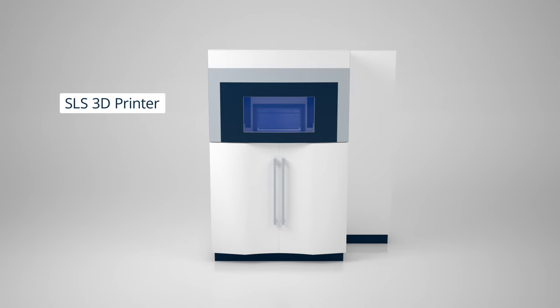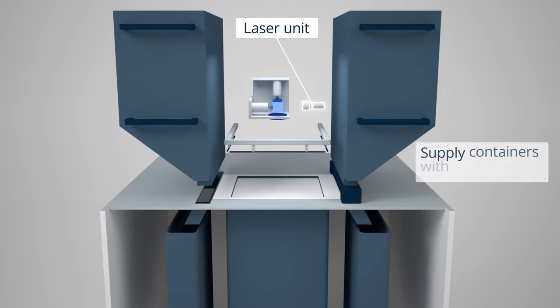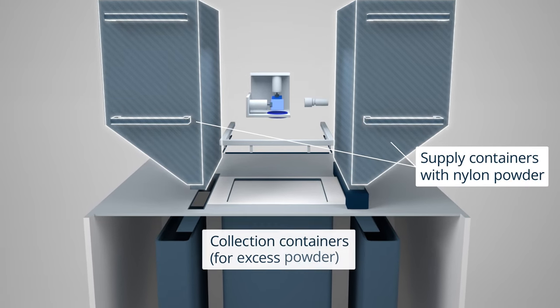Selective laser sintering is a laser powder bed fusion process that uses a high-power laser to sinter small particles of polymer powder, primarily nylon.